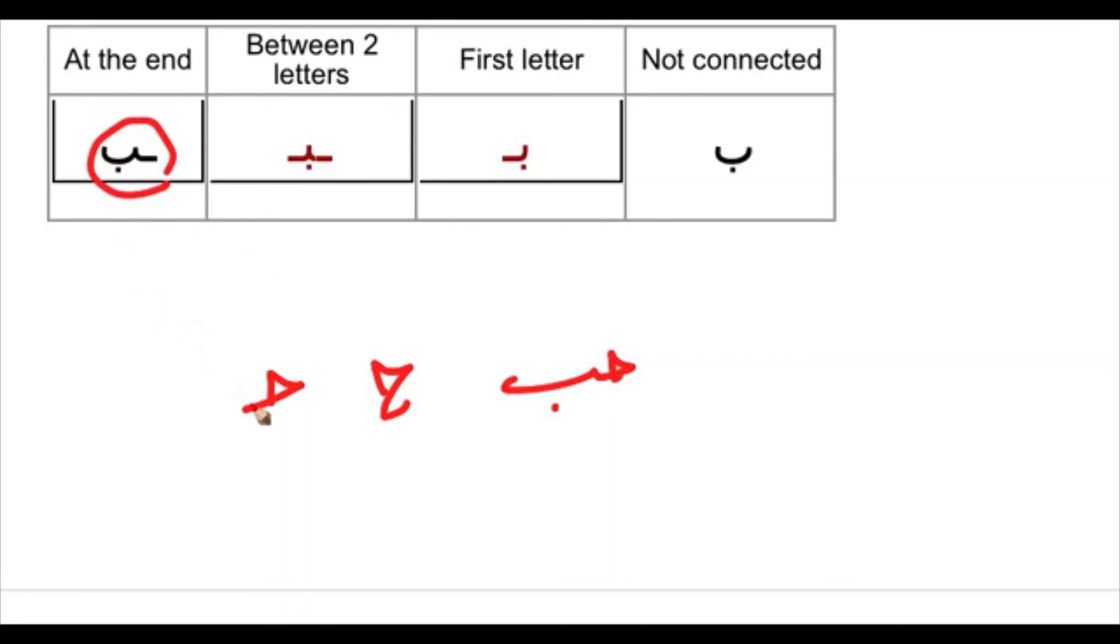Then we add the letter BA. You remember the letter BA here? We will add it, so HUB, which means love. Alright, so this is how it is at the end. We showed you how it is at the beginning and how it is between, so it's very simple, very easy.